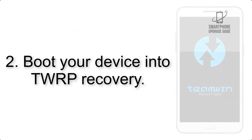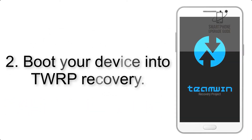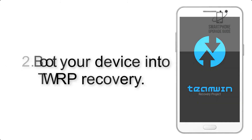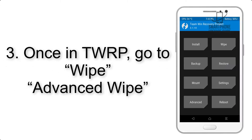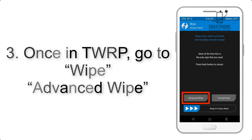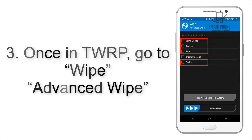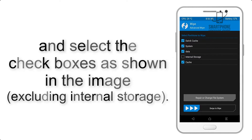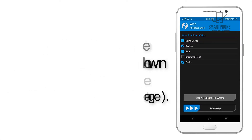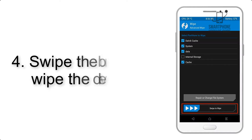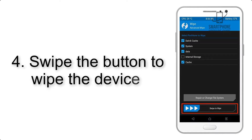Step 2: Boot your device into TWRP recovery. Once in TWRP, click on Wipe, then Advanced Wipe, and select the checkboxes as shown in the image, excluding internal storage. Step 4: Swipe the button to wipe the device.